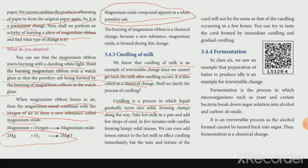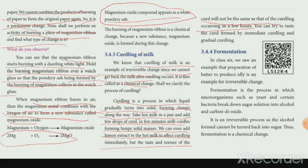During curdling, the milky liquid gradually turns into a solid, forming clumps. Heat the milk in a pan and add a few drops of curd; in a few minutes the milk curds, forming lumps of solid masses. We can also add lemon juice to hot milk to curd it immediately. However, the taste and structure of the curd will not be the same as curd formed gradually over a few hours.